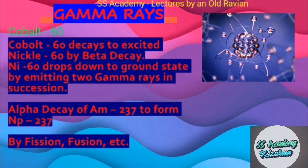Gamma ray imaging relies on the nature of gamma ray interaction processes, for example pair production. Gamma rays are used to kill living organisms by a process called irradiation. Gamma rays are used to treat some types of cancer by a procedure called gamma knife surgery, and are used in nuclear medicine as well as in imaging techniques.